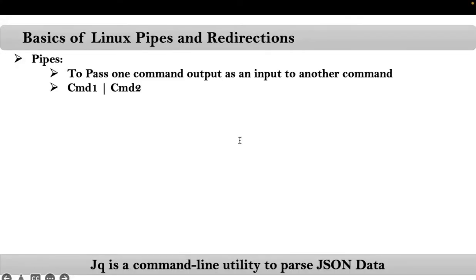This pipeline concept we will use with jq command while working with filters and functions. Sometimes you may need to pass one filter output as an input to another filter, or one filter output as an input for another function. During that case we will use this pipeline concept.